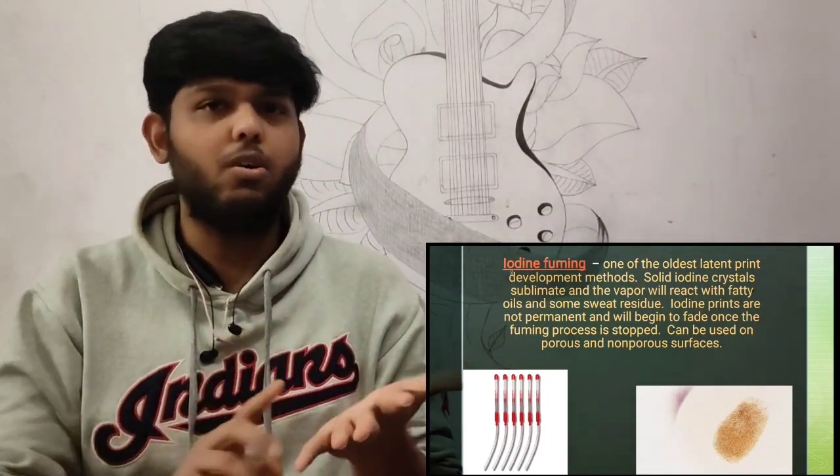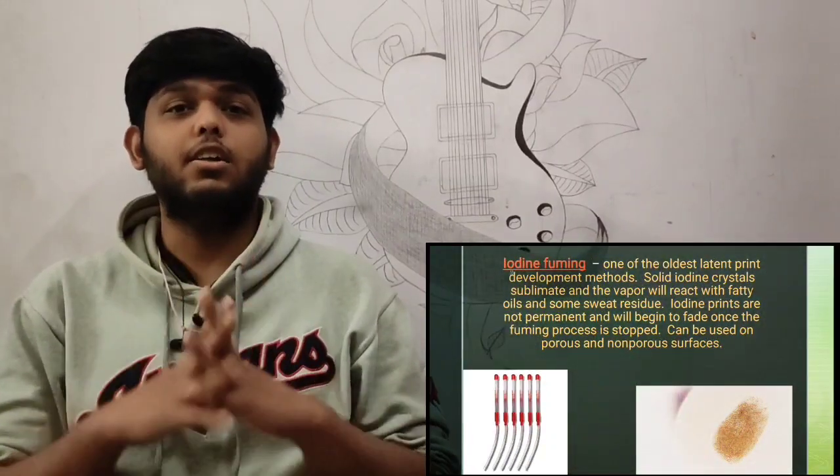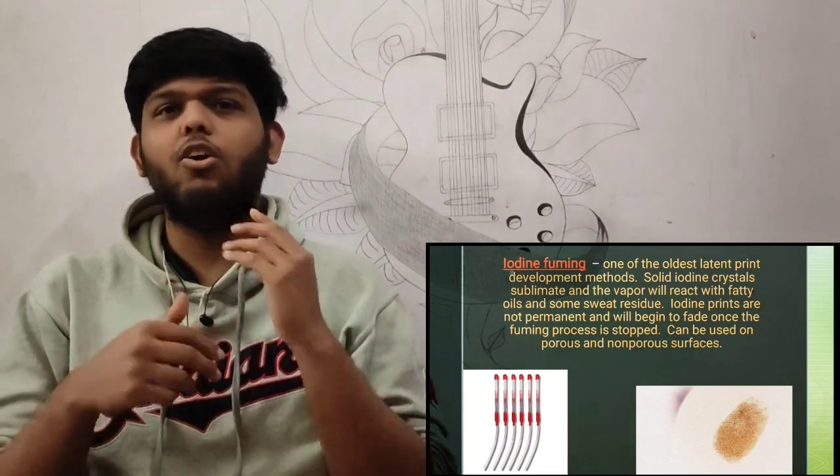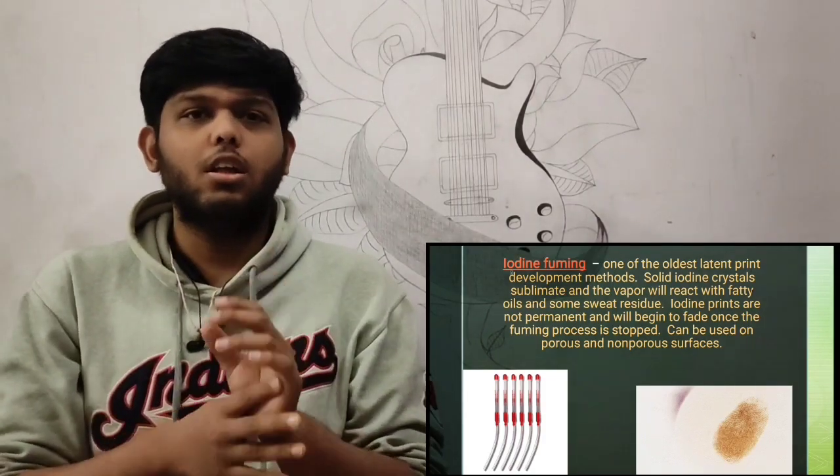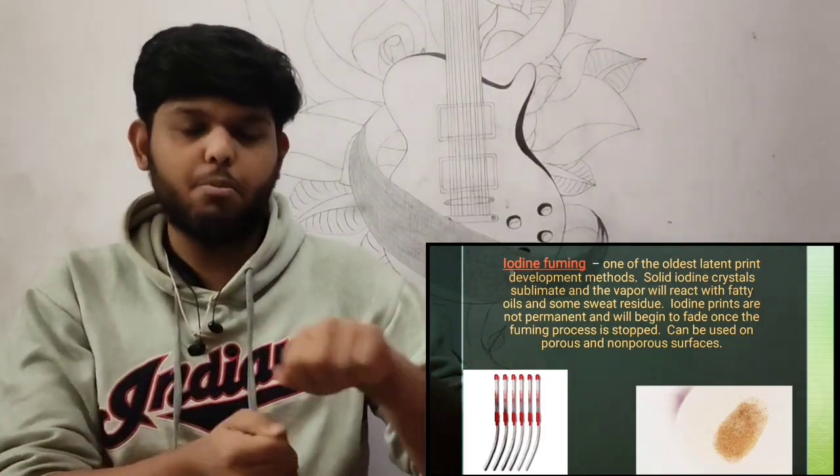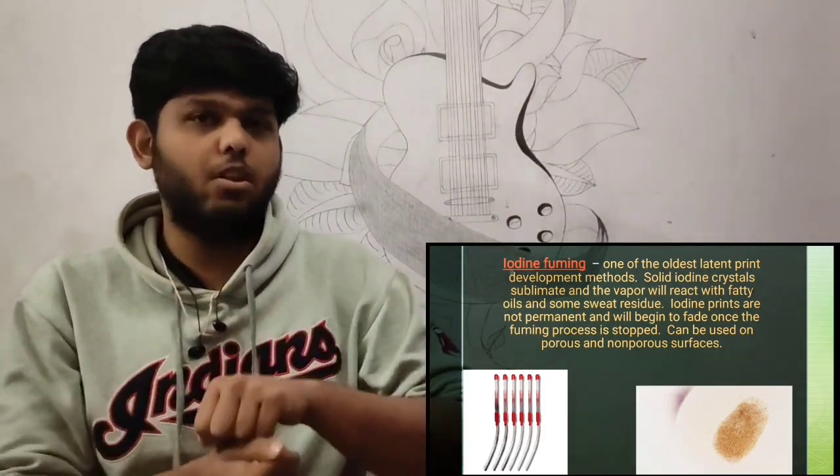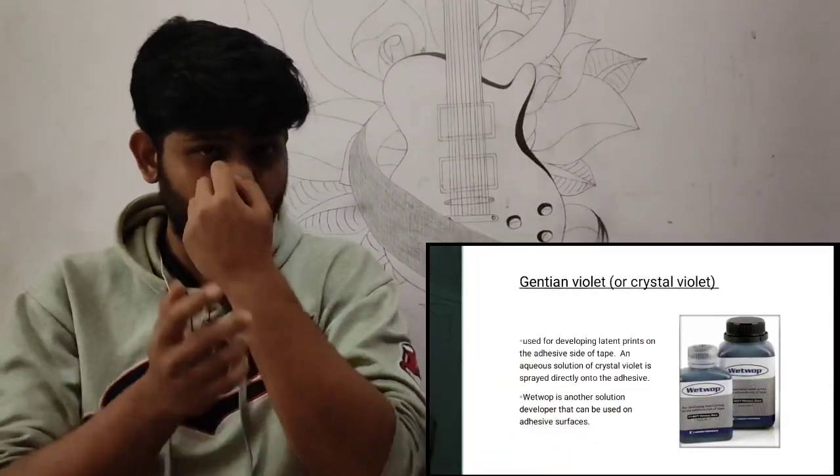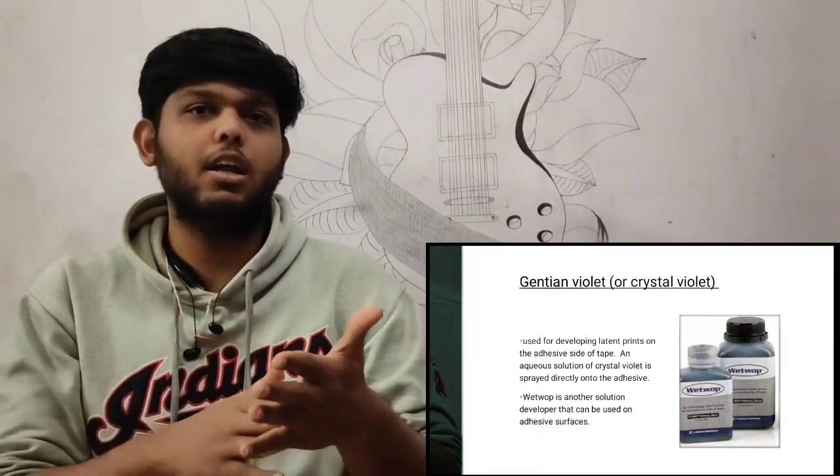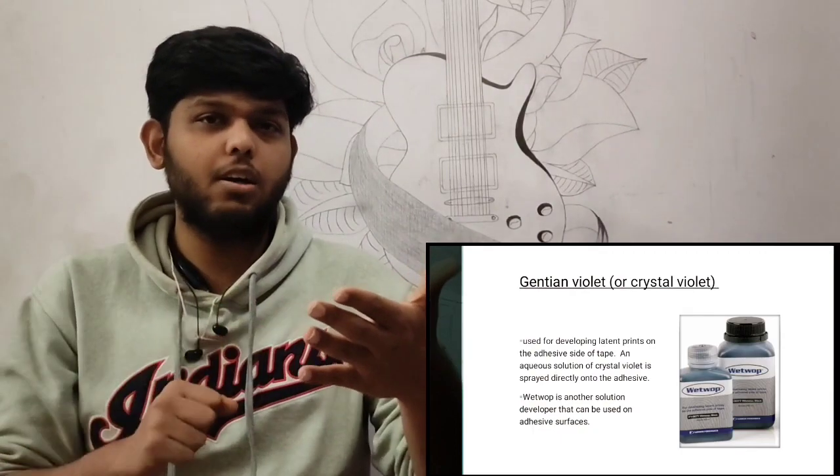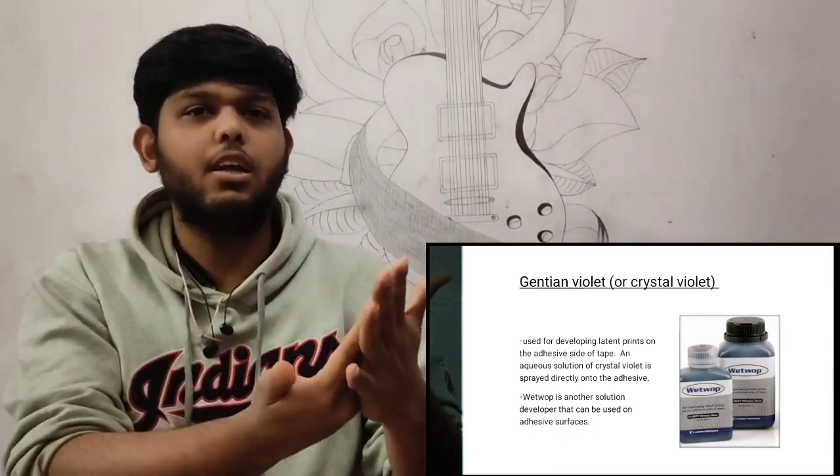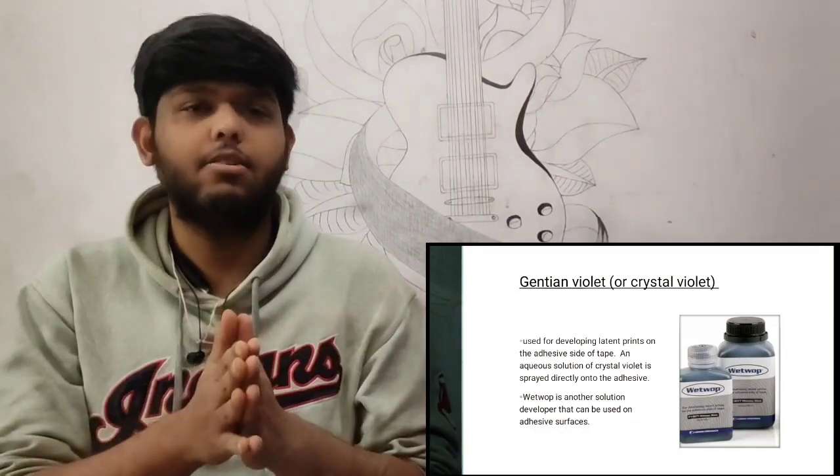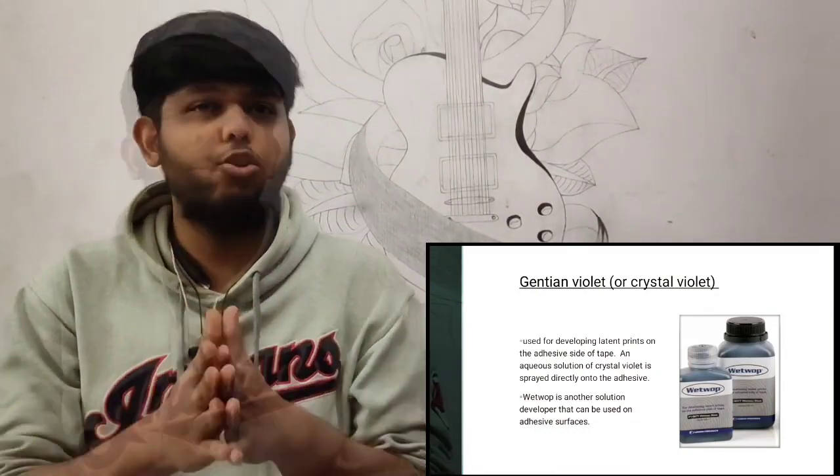Third is gentian violet. Gentian violet is another chemical used as a secondary development method. If you have taken some fingerprint on tape that was partially visible or latent, you spray the gentian violet on the adhesive side of the tape so it can develop automatically and become visible. The last is amino black.